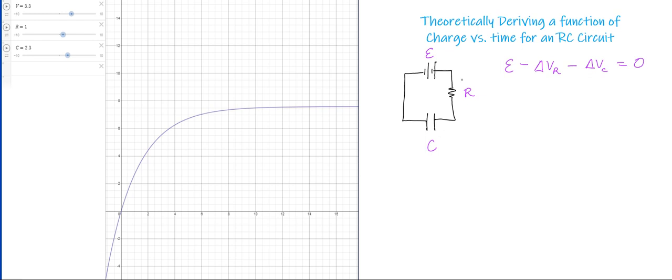Now this is an ohmic resistor, meaning that resistance is constant, so I can say that the voltage drop across that resistor is the product IR. So I'll go ahead and substitute that in. The voltage across the capacitor is going to be equal to—if we take our capacitance equation—we can see that ΔV equals Q over C. So I'll go ahead and substitute this in over here.